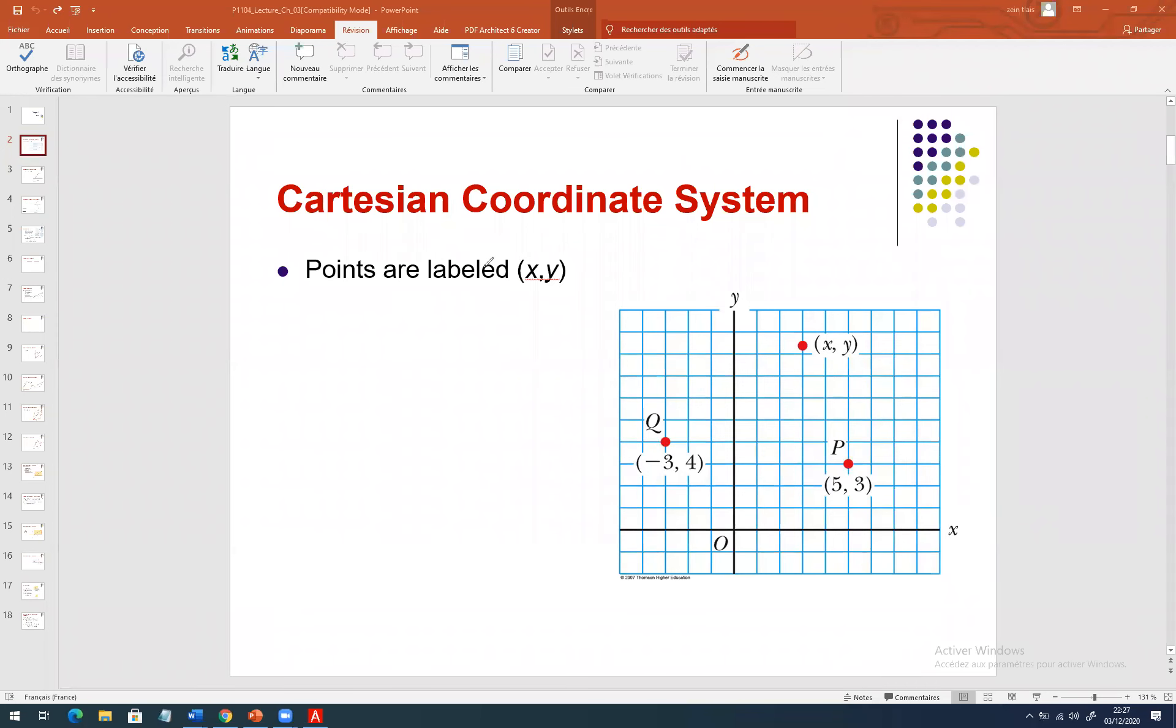In Heidel-Med, we will use two coordinate systems. First of all, we have the Cartesian coordinate system. Any point must be labeled by x and y. x is the projection of the point on the x-axis, and y is the projection of the point on the y-axis. This is the Cartesian coordinate system.